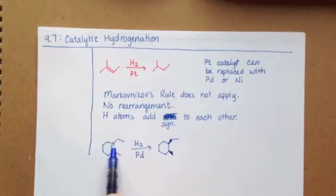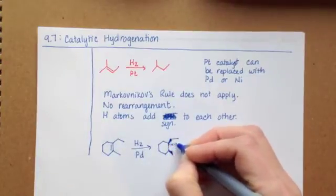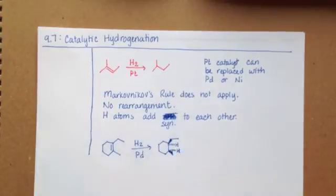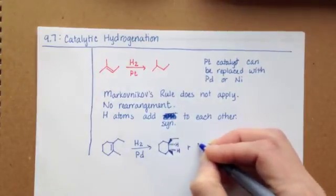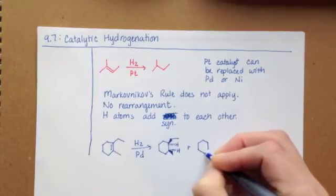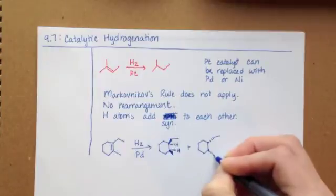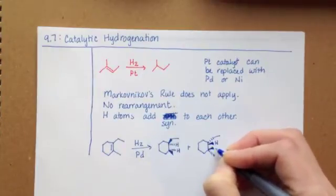And the way that we're going to draw this is by just using wedges to show that the functional groups that are already present on the alkene are going to stay on the same side of the molecule. And the hydrogens that we add to the molecule are going to be syn to each other or on the same side of the molecule.